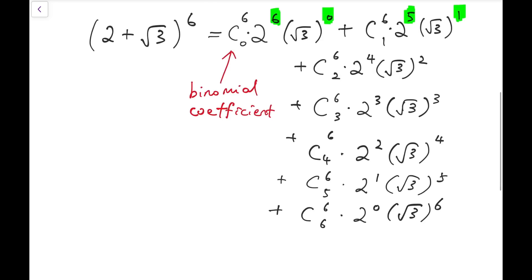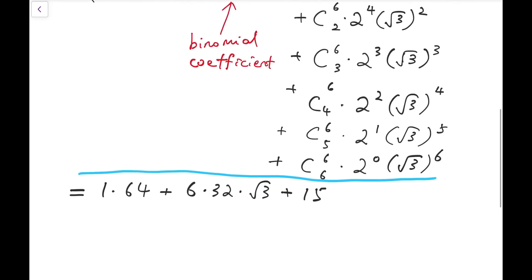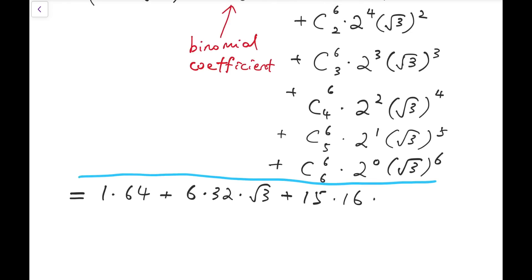So we're going to calculate them one by one. Now from this, for the first term, it's 1 times 64. And the second one is 6 times 32 times root 3. 6 choose 2 is then 15. Let me draw a blue line here to separate them. They are not the same thing. 15 times 16 times 3 plus 6 choose 3 is 20 times 8 times 3 root 3, plus 15 times 4 times root 3 to the power of 4 and that's 9. And then we're going back to 6 times 2 times 9 root 3. And at last, we have just root 3 to the power of 6 and that is 27.